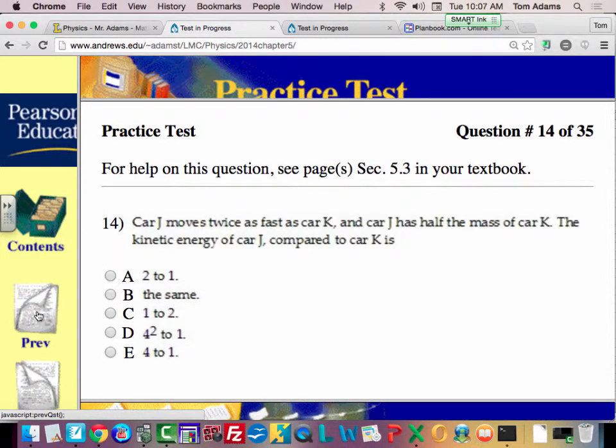Car J moves twice as fast as car K. Car J has half the mass of car K. What is the kinetic energy of J compared to K?